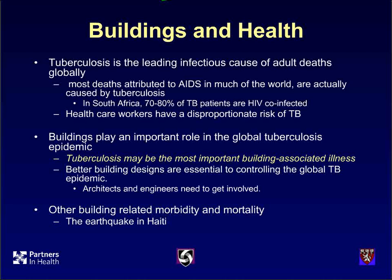Tuberculosis is the leading cause of adult deaths globally — arguable with HIV, but many deaths in HIV, the majority in many cases, are due to TB. Overall, tuberculosis is a huge infectious killer of adults, and buildings play an important role. I make the case that in terms of building-associated illness, TB may be the most important one. Tuberculosis is an airborne infection.